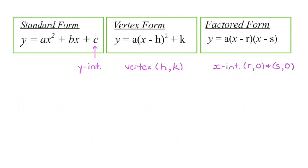Quadratic functions can be represented in three different ways. In standard form, the c value gives us our y-intercept. In vertex form, hence the name, it gives us the vertex — so h is the x-coordinate of the vertex, and k is the y-coordinate of the vertex.